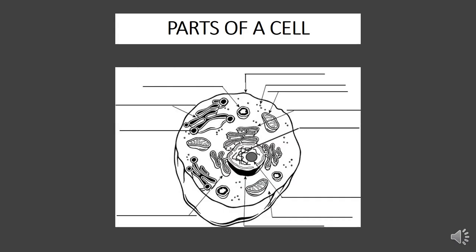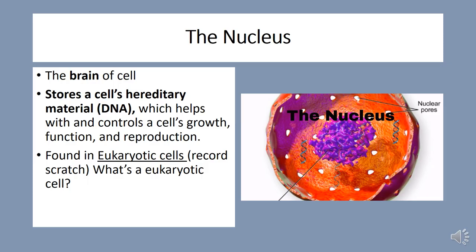One topic you'll need to know for the TEAS exam is the main parts that make up a cell. Let's do this. The most important part of the cell is the nucleus — it's the brain. The key function of the nucleus is to control cell growth and multiplication.